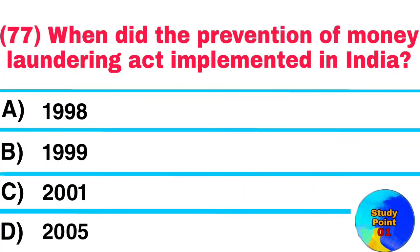Question No. 77. When was the Prevention of Money Laundering Act implemented in India? Answer: 2005.